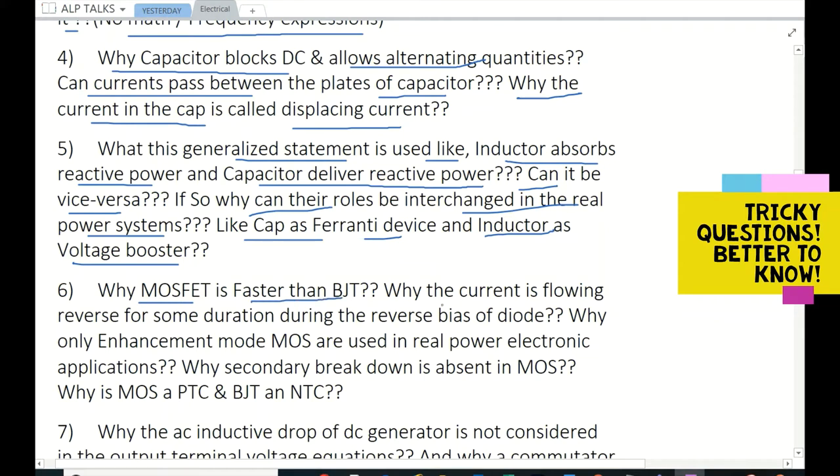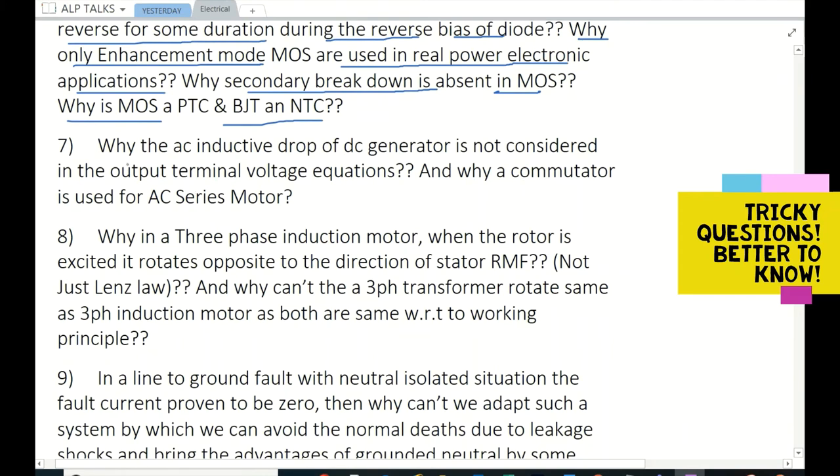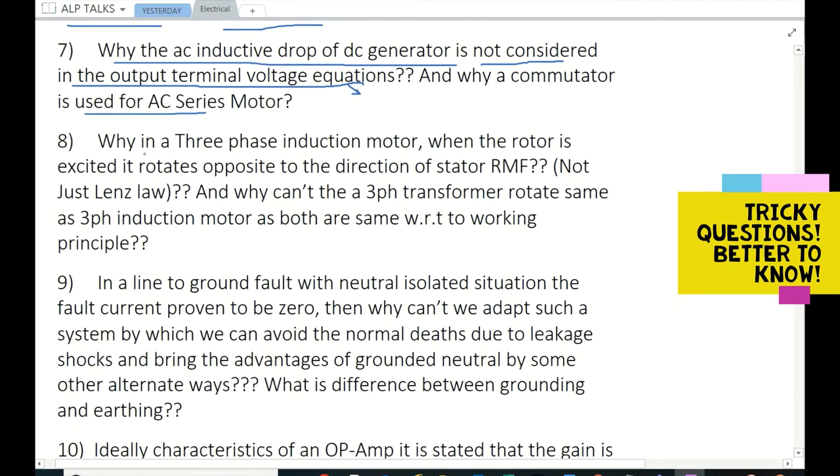Why is MOSFET faster than BJT? Why is the current flowing reverse for some duration during the reverse bias of diode? Why are only enhancement mode MOSFETs used in real power electronic applications? Why is secondary breakdown absent in MOS? Why is MOS a PTC and BJT an NTC? Why is the AC inductive drop of DC generator not considered in the output terminal voltage equations? Mostly we will take care of commutator, but many people won't take care of it. And why is a commutator used for AC series motor? Why in a three-phase induction motor when the rotor is excited it rotates opposite to the direction of stator rotating magnetic field?